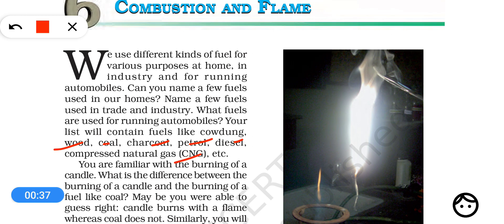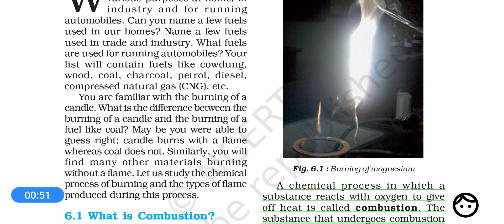For example, if we try to burn wood, we need to heat it for a very long time, then only it burns, and it burns slowly. Another thing to think about: you see that a candle burns with a flame but coal does not produce a flame. So why is it that a candle burns with a flame but coal is just producing a glow and not a flame?